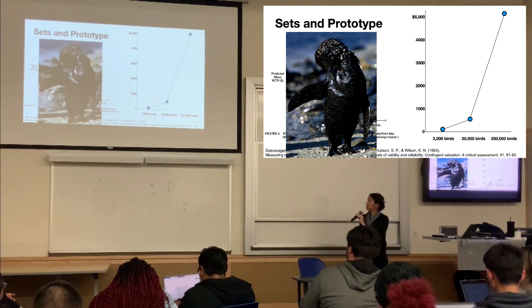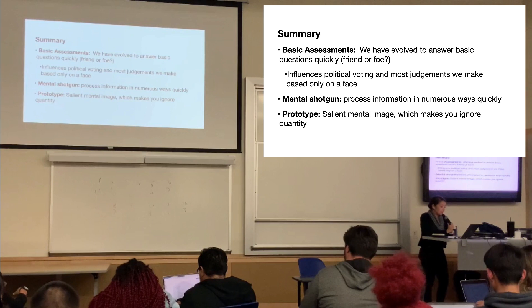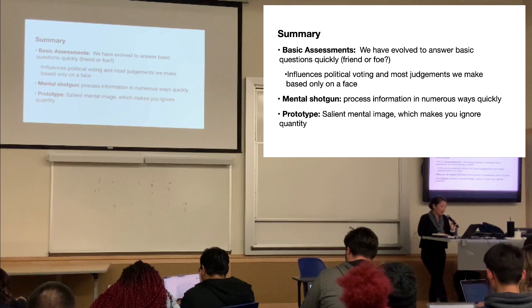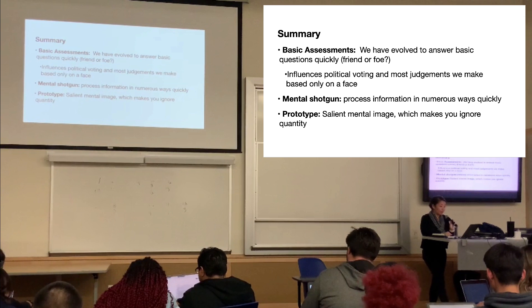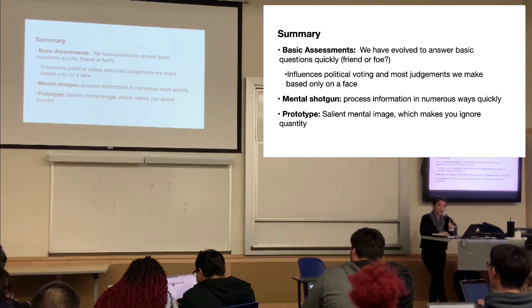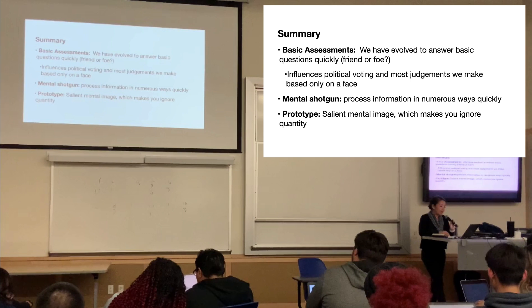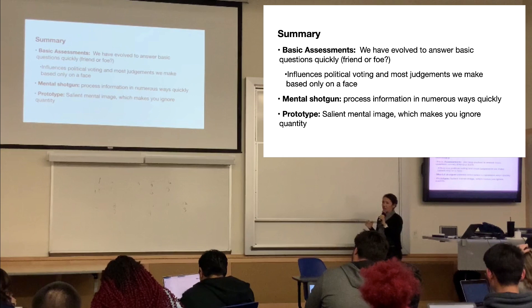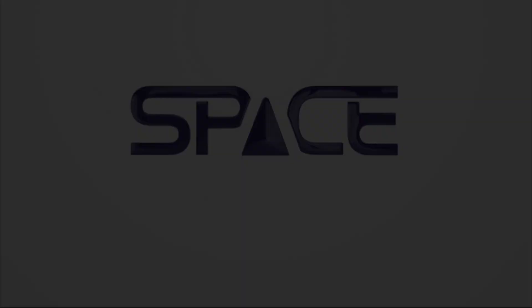Summary: For basic assessments, we have evolved to answer questions quickly, such as friend or foe, which influences political voting and most judgments based on facial information. There's also the concept of the mental shotgun, where we process information in numerous ways quickly. Finally, prototypes occur when a salient mental image causes you to ignore quantity — you focus on that salient piece of information and ignore the rest.